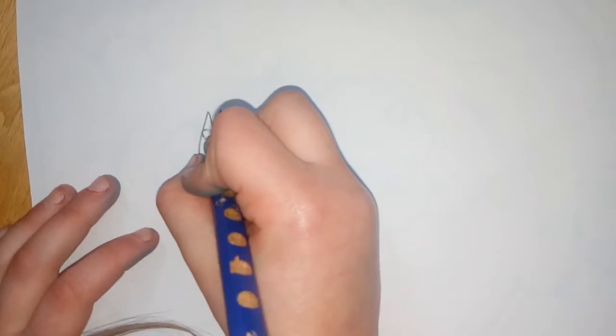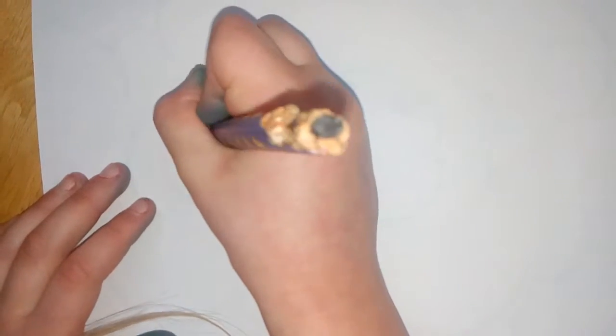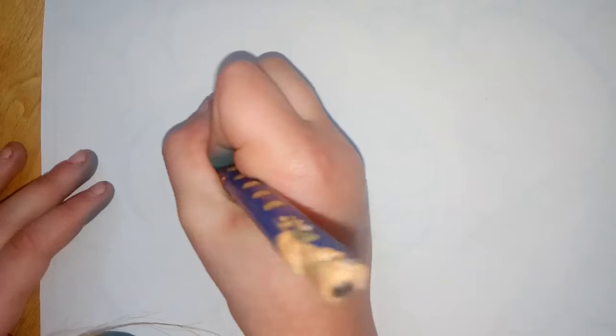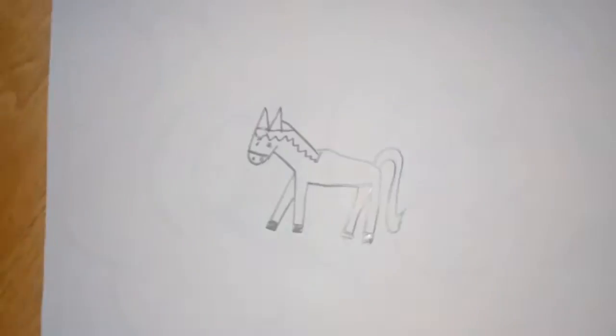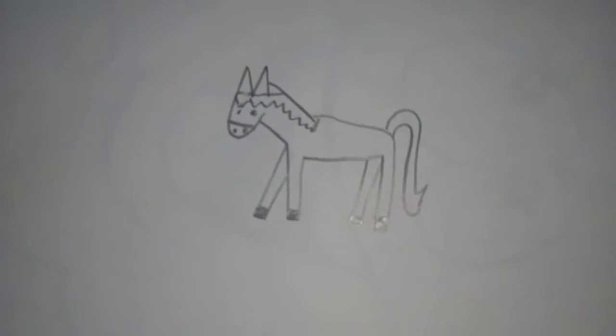And then now we're going to do the eyes and the nose. So two eyes and then a line across and then two dots. Now we've done the horse, it's time to color in.